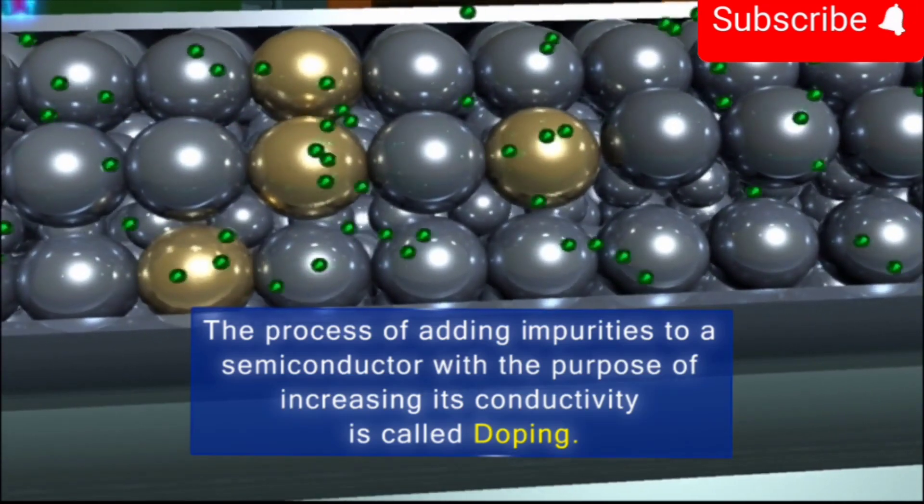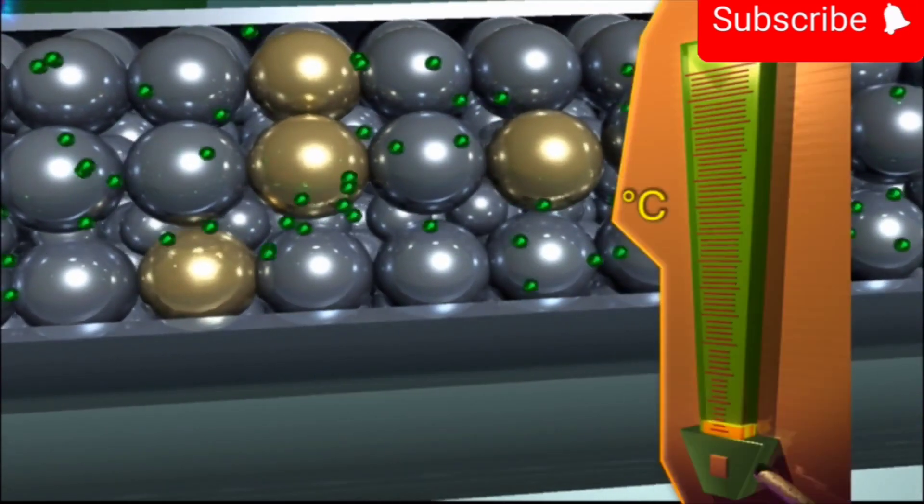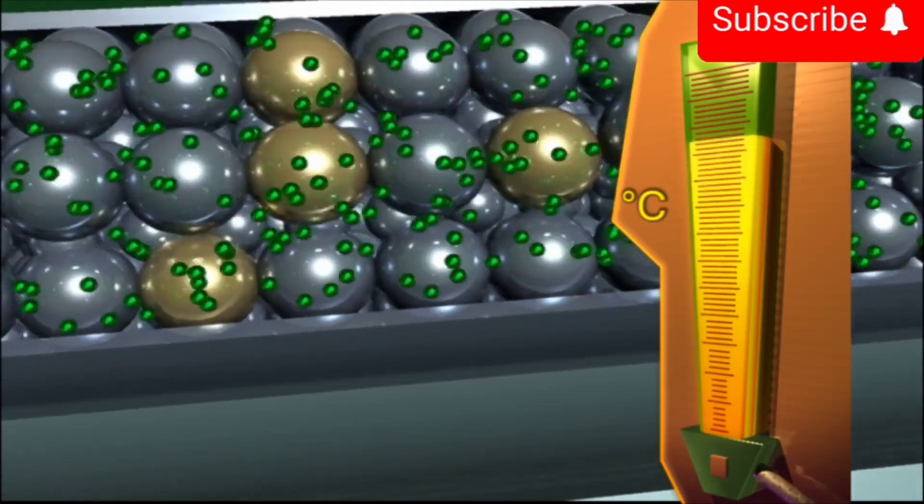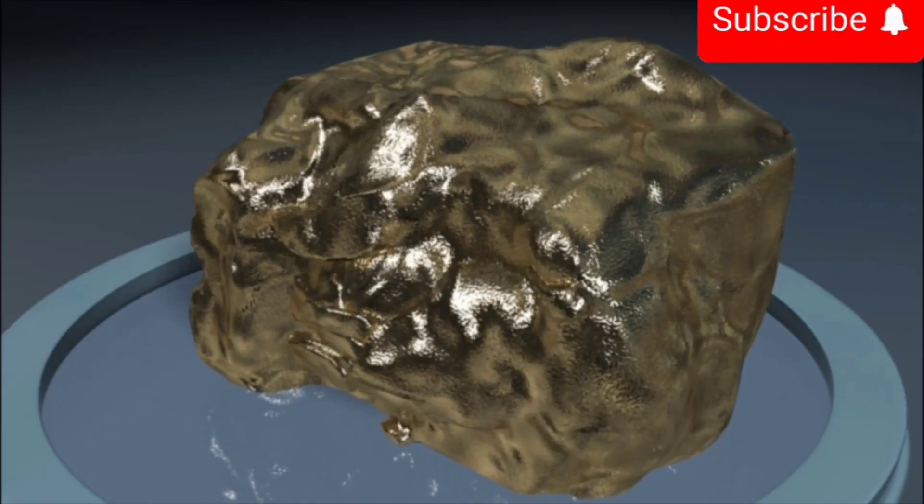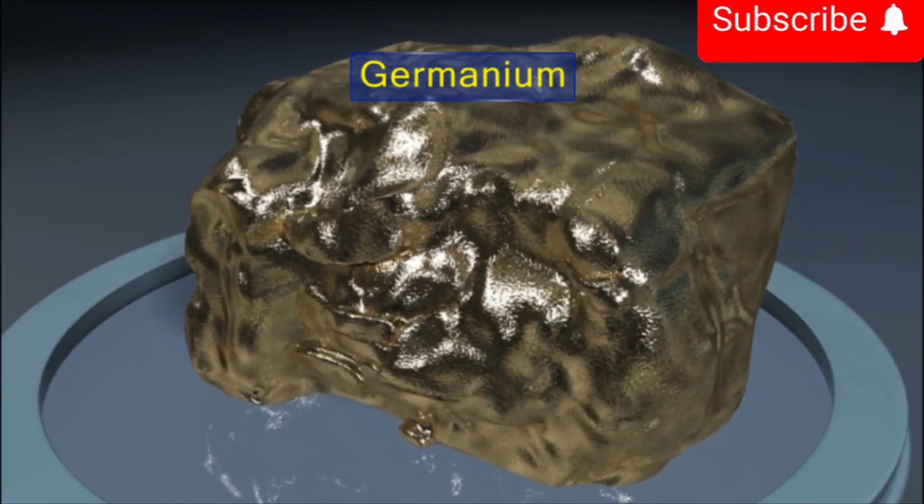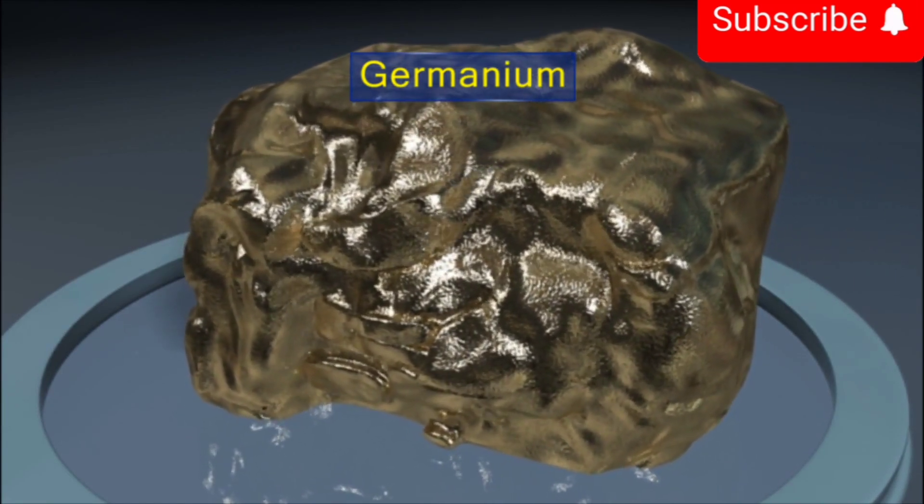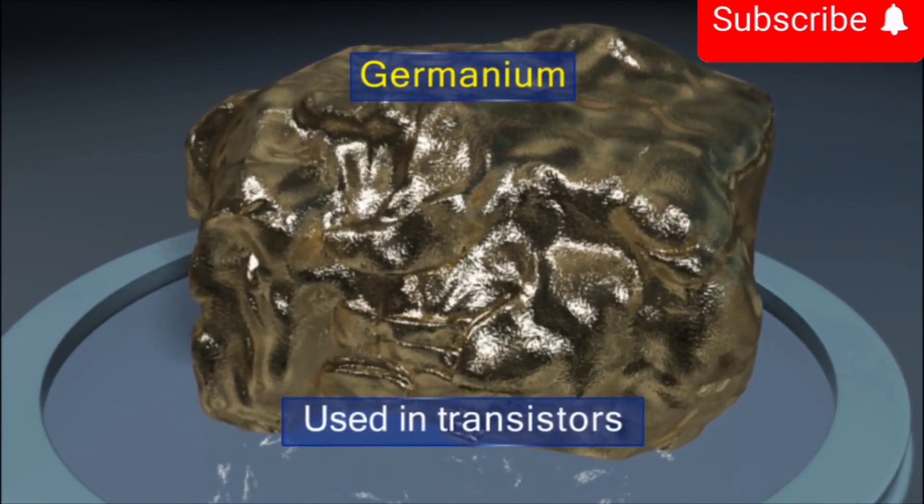The conductivity of a semiconductor can also be increased by increasing its temperature. Besides silicon, germanium is another example of a semiconductor which is widely used in transistors.